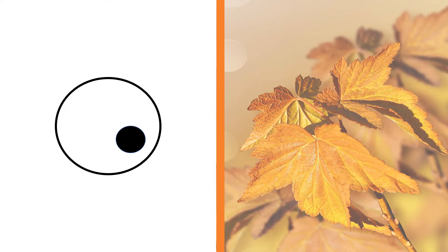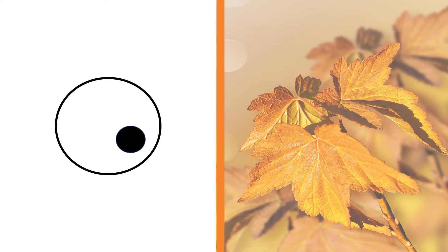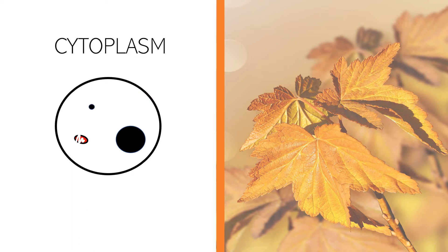Inside the cell membrane is the nucleus. It is represented by a black circle. In between the nucleus and the cell membrane is the cytoplasm. The cytoplasm contains tiny structures called organelles.